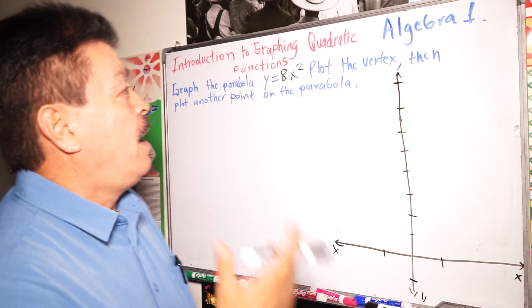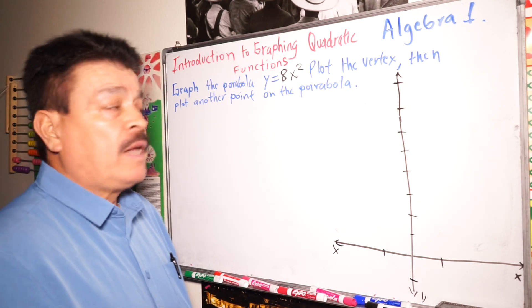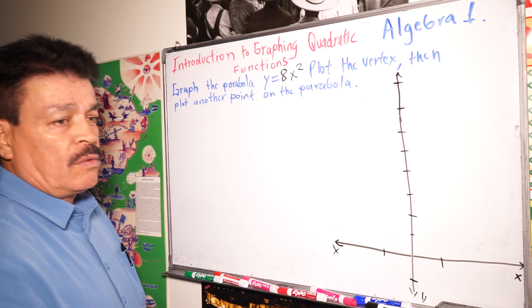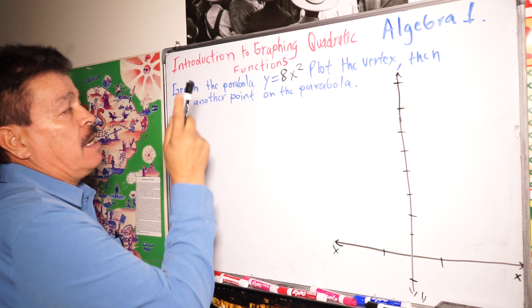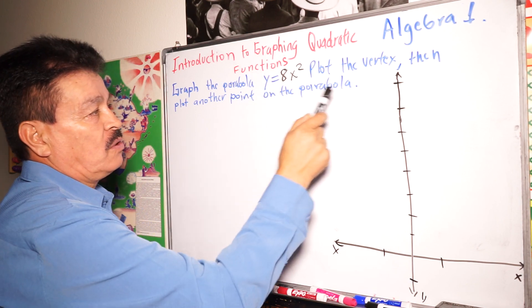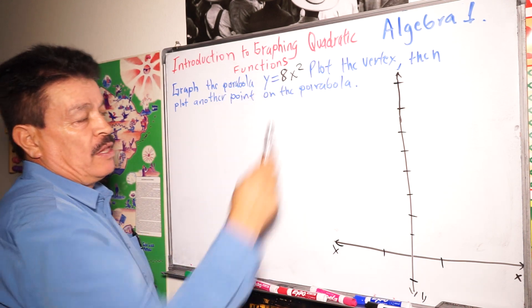Introducing graphing a quadratic function. This is our topic for Algebra 1 today. I'm going to solve one example here. Graph the parabola y equals 8x to the second power, plot the vertex, then plot another point on the parabola.